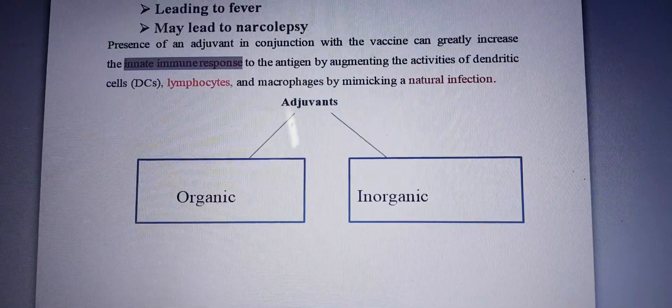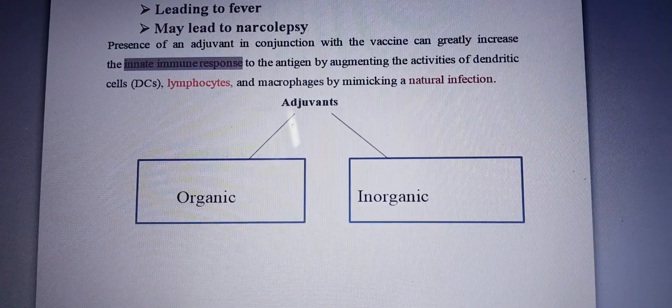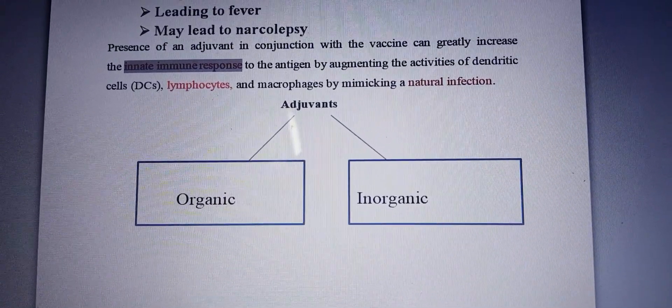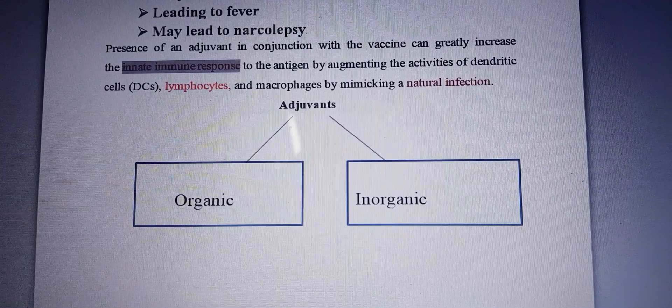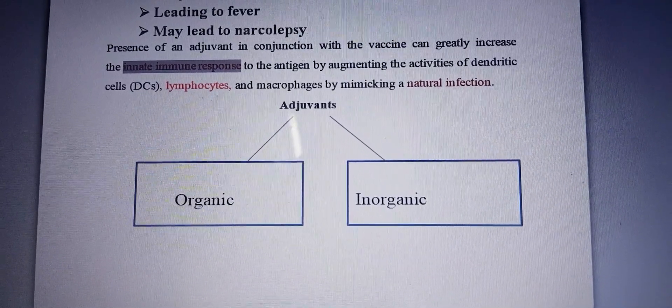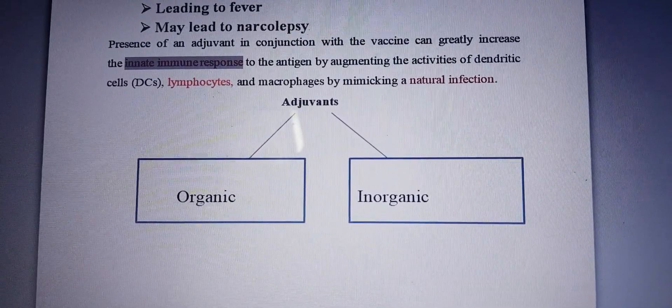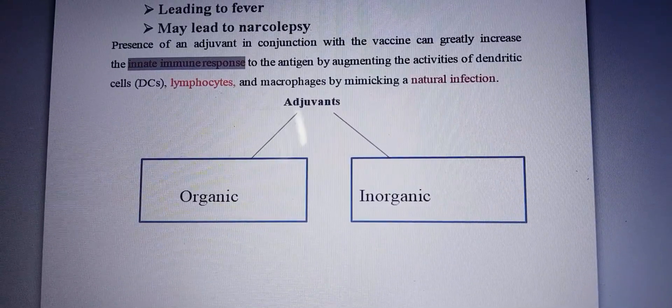Adjuvants are of two types: organic or inorganic. Any of these adjuvants, when added to a vaccine, enhances the production of antibodies by the cell. Thank you so much, students.